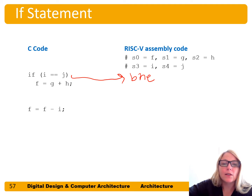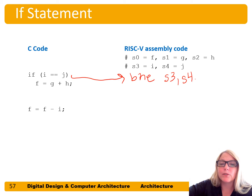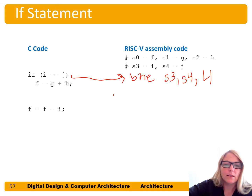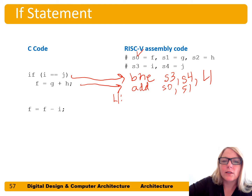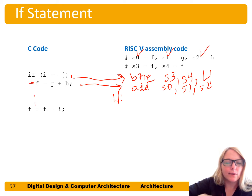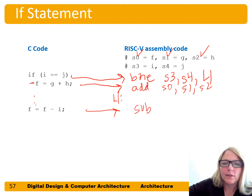We use branch-if-not-equal on i and j: i is in s3, j is in s4. If not equal, branch past the next instruction or group of instructions to label L1. If they are equal, that branch won't be taken and we execute the next line: f equals g plus h, or add s0, s1, s2. Then it continues to the next line: f equals f minus i, or sub s0, s0, s3.